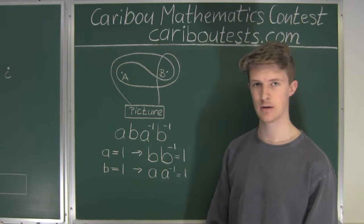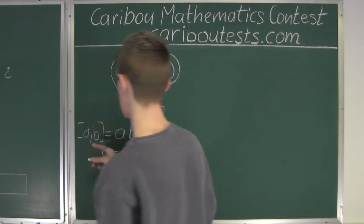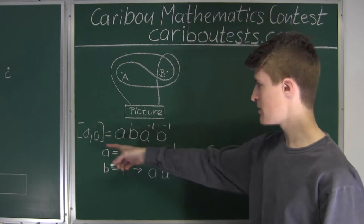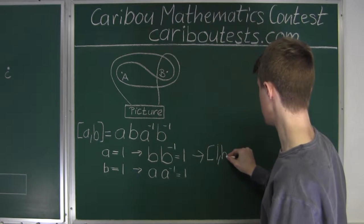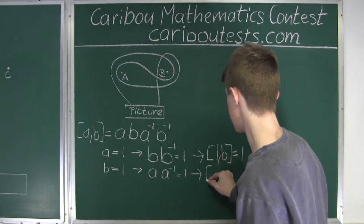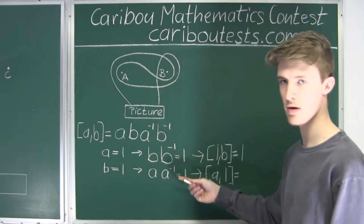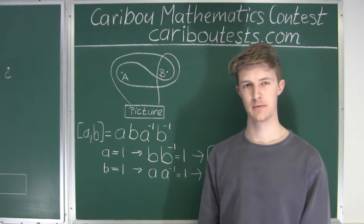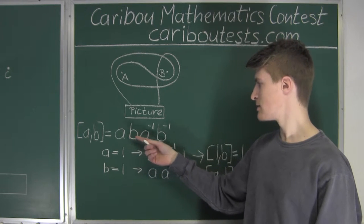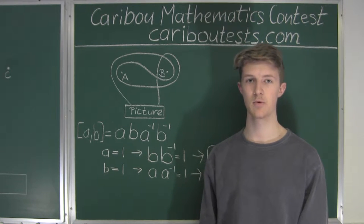Let's introduce this abbreviation: [A, B] in brackets. This possesses two properties: when A equals 1, we get [1, B] which equals 1, meaning the picture would fall down. So far, this bracket notation is just a shorter notation for A times B times A to the power of negative 1 times B to the power of negative 1. But this new notation is the key to solving a problem with 3 or more nails.